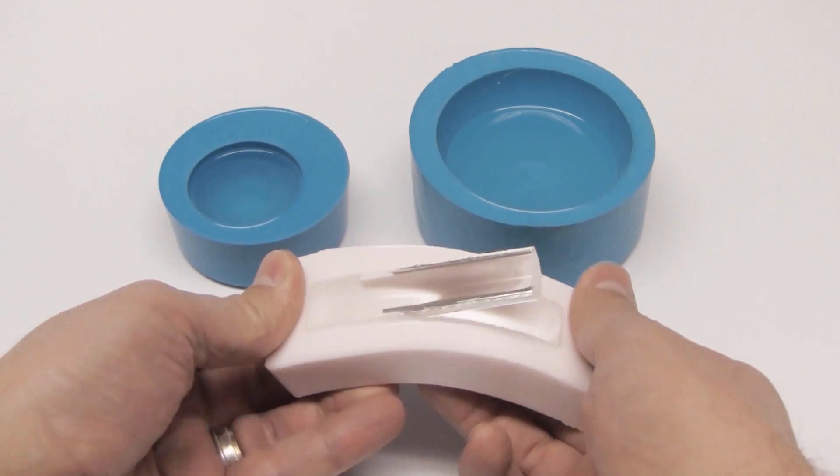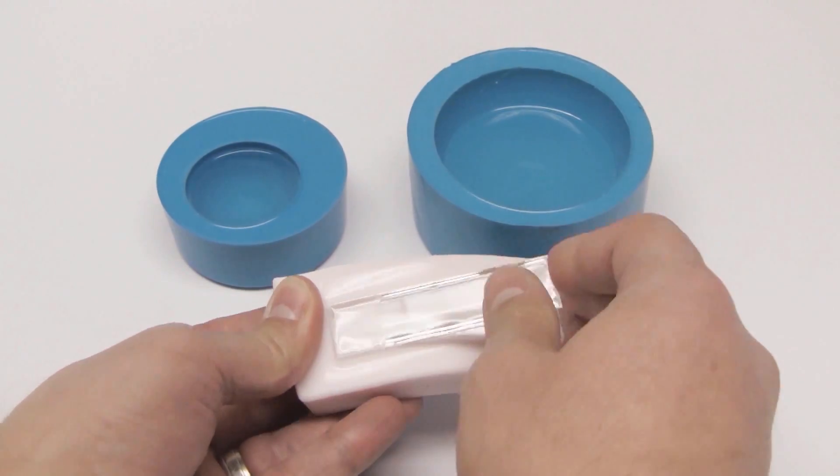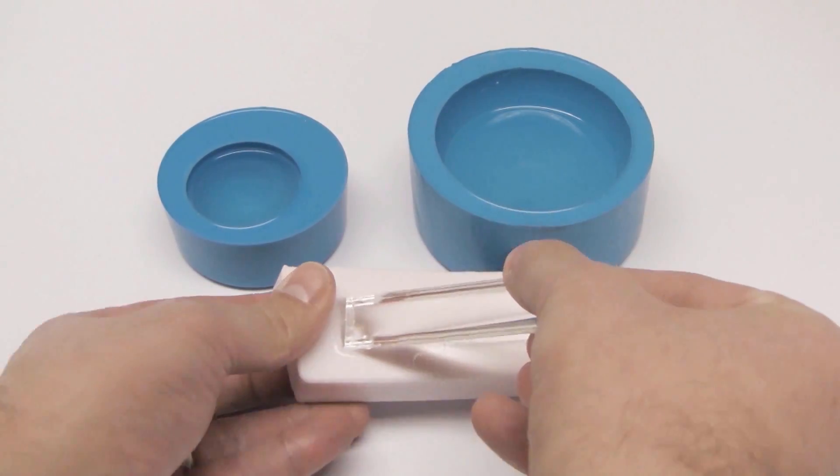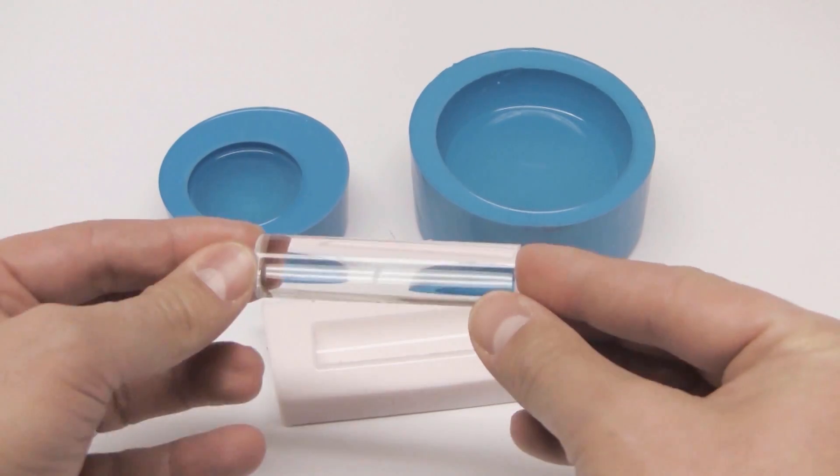Once cured, simply flex the mold and remove your part. As you can see in these three parts, the system produces high clarity pieces.